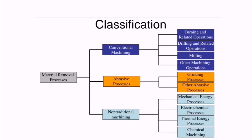This is a classification of metal removal processes. Conventional machining includes turning, drilling, and milling. Abrasive processes include grinding and other abrasive processes. Non-traditional machining processes include mechanical energy processes, electrochemical processes, and thermal energy processes. These are the different classifications of metal removal processes.